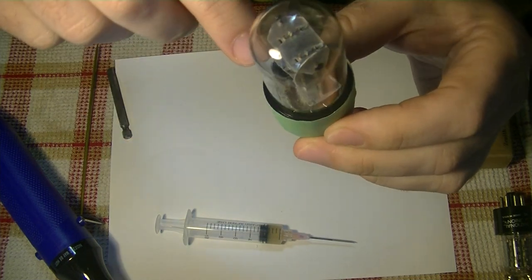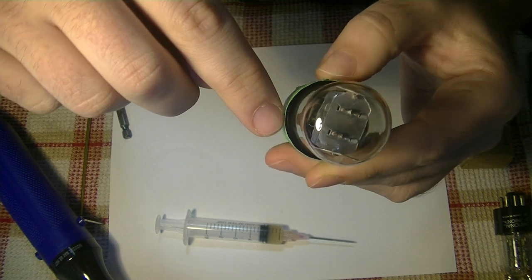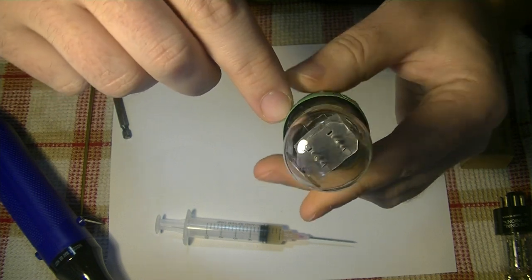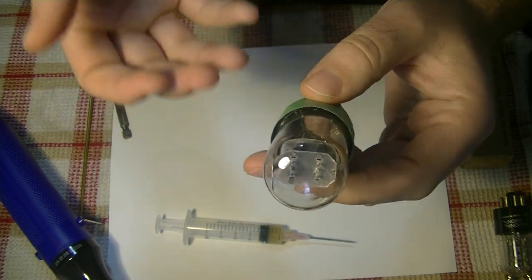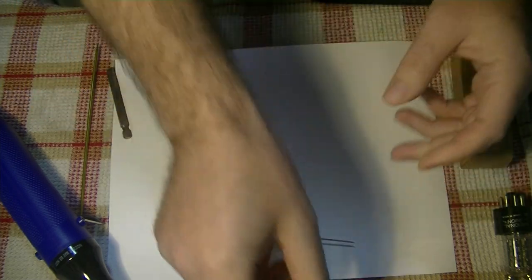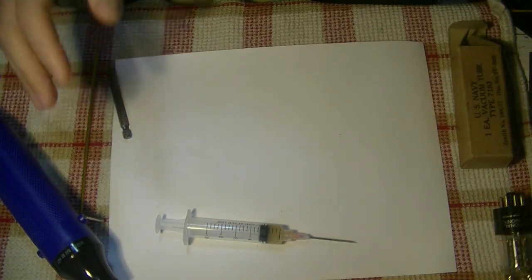What you want to do is get it set so the level of the shellac is just below the level of the base here. You don't want it too high. The higher it gets, the more it's going to bubble, the more mess it's going to make. I'm not going to use the heat gun on camera here. It's very loud. But through the magic of television, I did another tube earlier.